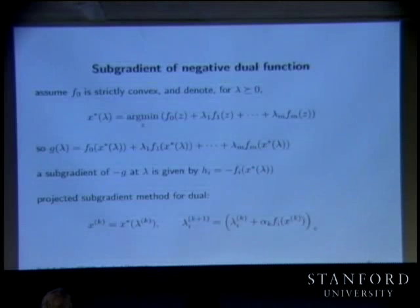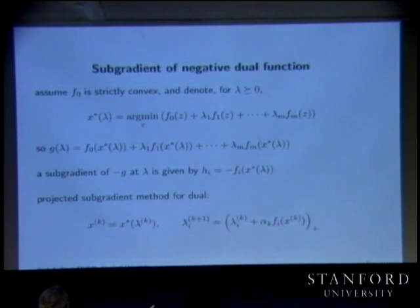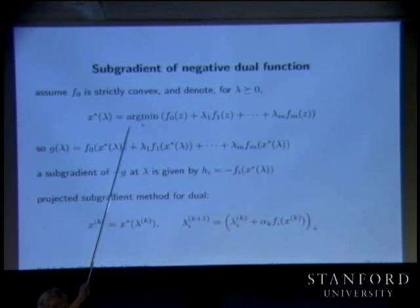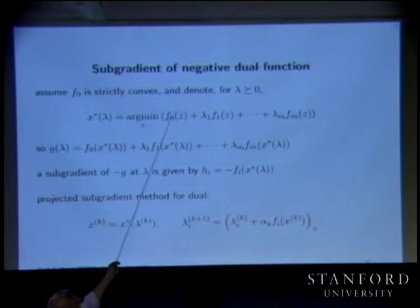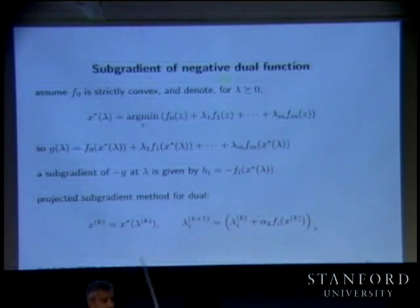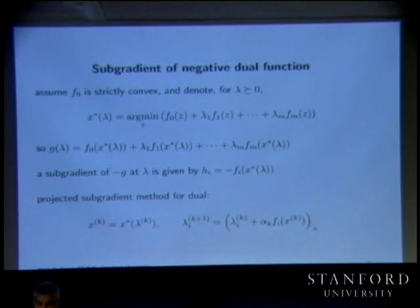G is the infimum over z of this Lagrangian. That's what g of lambda is. Negative g of lambda is a supremum. How do you calculate a subgradient of a supremum? No problem — you pick the point that maximizes it.